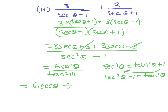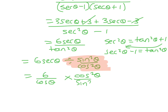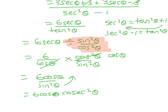So that's 6 sec θ divided by tan² θ. Now tan² θ is (sine θ / cos θ)² and sec θ is 1/cos θ. When you divide, you flip and multiply: sec θ over tan² θ becomes (1/cos θ) times (cos² θ / sin² θ). One cos cancels, giving 6 cos θ on sin² θ. Bringing sin² θ to the top gives its reciprocal, which is 6 cosec² θ. And that's as far as you can go.